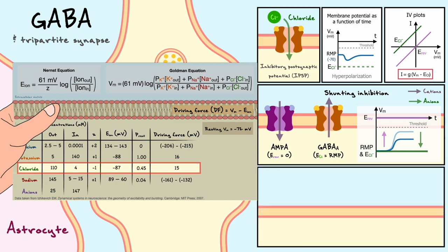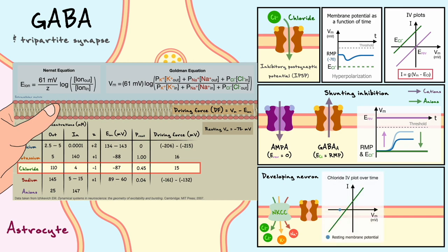Although GABA is typically covered as an inhibitory neurotransmitter, this assumes a mature neuron — in the developing brain, GABA actually forms excitatory connections. Whether a channel produces inhibition or excitation is purely a product of the ionic concentrations surrounding the neuron. Early in development, chloride concentrations are mainly controlled by the NKCC cotransporter, which transports 1 sodium, 1 potassium, and 2 chloride ions inside the cell. As a result, the internal chloride concentration is very high, and its equilibrium potential becomes higher than the resting membrane potential. When GABA receptors open, chloride ions leave the cell and cause a depolarization.